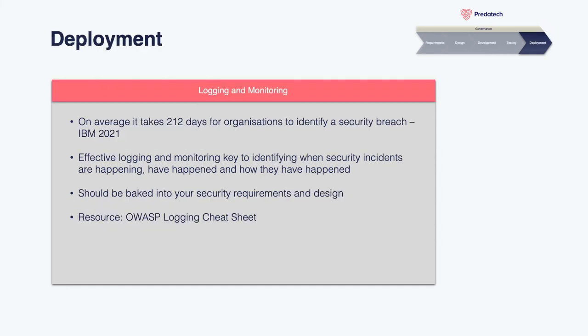You've finally made it to deployment — your product or new features move into production. But just because you've finished your initial development or sprint doesn't mean you can forget about security. You need to effectively monitor the application for signs of compromise, just as you would monitor performance. According to a report published by IBM in 2021, it takes organizations 212 days on average to even identify that there has been a security breach — almost two thirds of a year. In that time, an attacker could be coming back on a regular basis and no one is any the wiser.